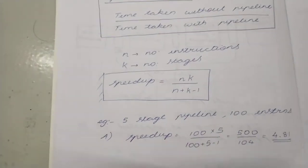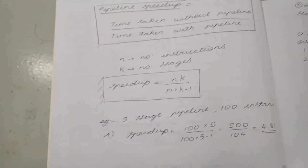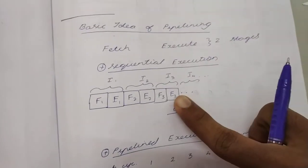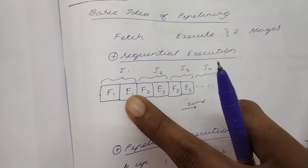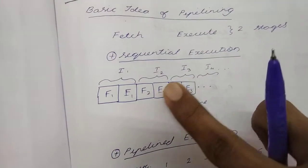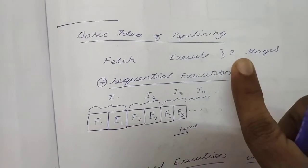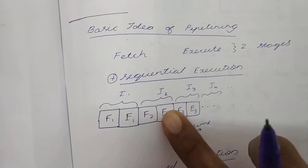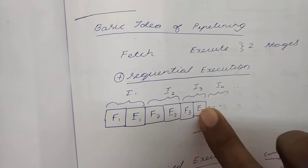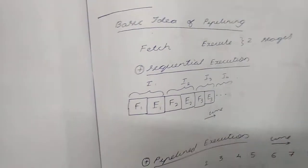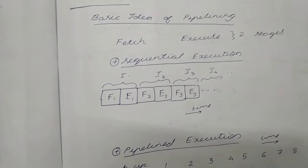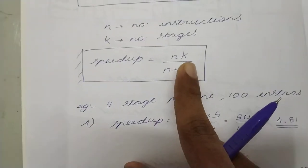n into k happens because time taken without pipeline means sequential execution. If there are 3 instructions and there are only 2 stages, then k is 2. So 2 into 3, that is 6: 1, 2, 3, 4, 5, 6. That is the number of clock cycles it takes to execute the 3 instructions. So that is where the n into k comes.